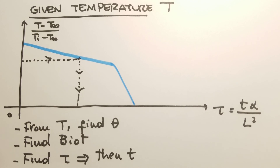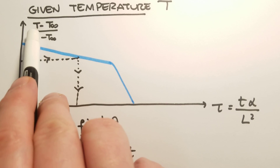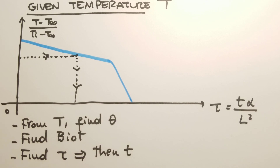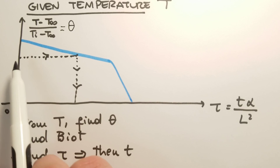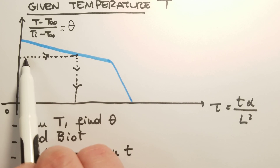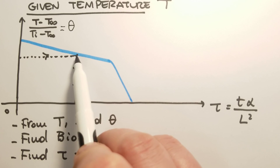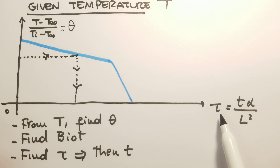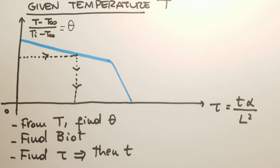In the second type of problem, we are given a temperature and want to find the time when it occurs at the mid-plane. We read the chart in reverse: compute theta from the known temperature, T-infinity, and Ti; move to the right to the line for our Biot number; then move down to read tau, the Fourier number. Once we have tau, we can compute the time because we know alpha and L squared. Thanks for listening, and I'll see you in the next lesson.